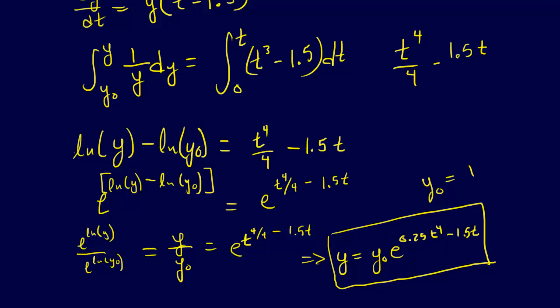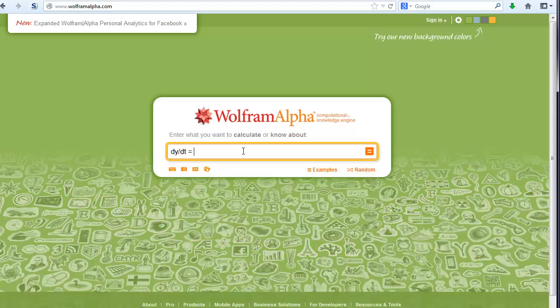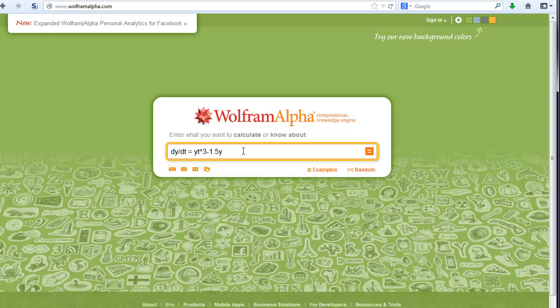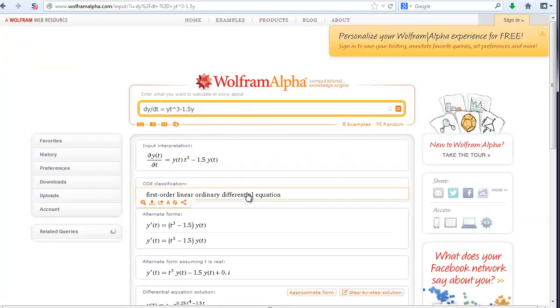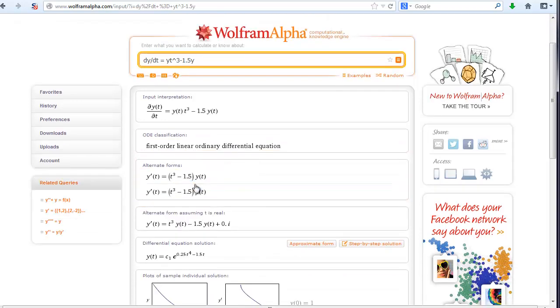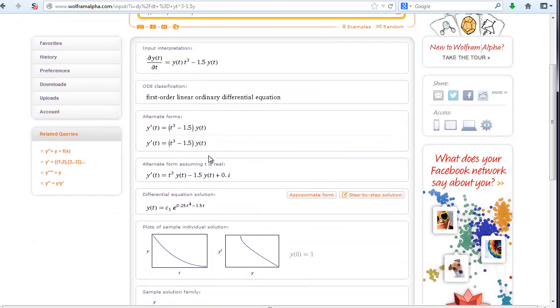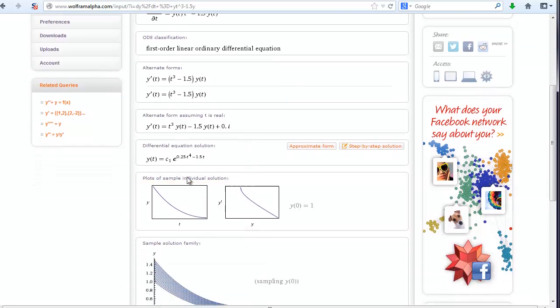Now, as I said, we could have solved this by hand, or we could have solved this with a computer or something, and so let's just go to Wolfram Alpha and check our answer. dy dt equals y t cubed minus 1.5 y. We can solve this. Okay, so it got it. It was able to factor it for us, and here's the solution, y of t equals c1, and we already know that c1 is equal to y naught, e to the 0.25 to the fourth minus 1.5 t.